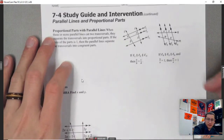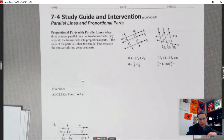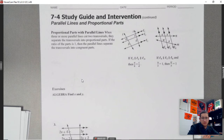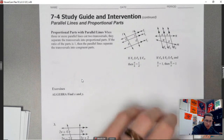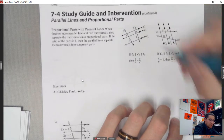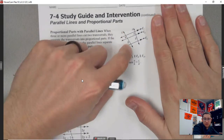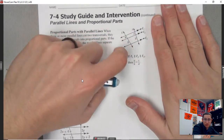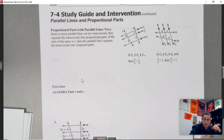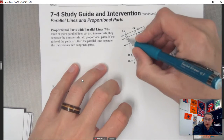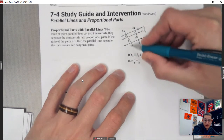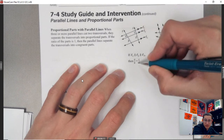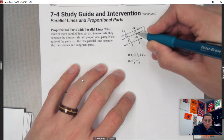Next property page: proportional parts with parallel lines. Two different properties here dealing with pictures that have three sets of parallel lines. You have two transversal lines and three parallel lines. The result is a simple property: the lengths end up being proportional, so A over B equals C over D.